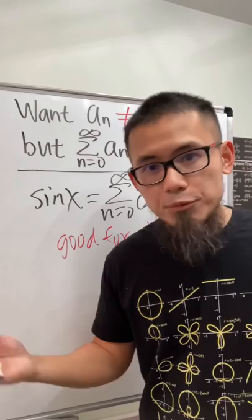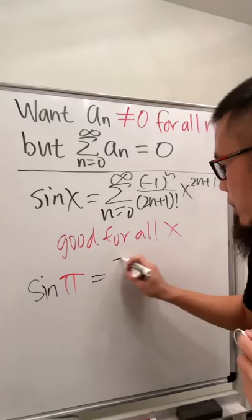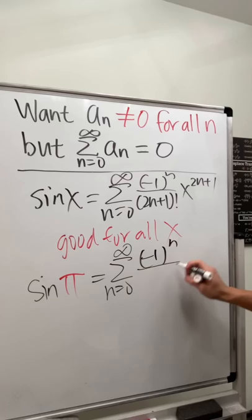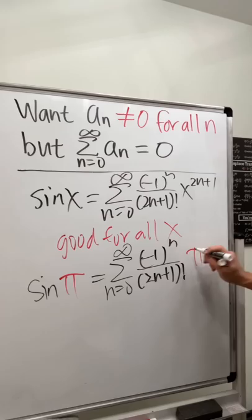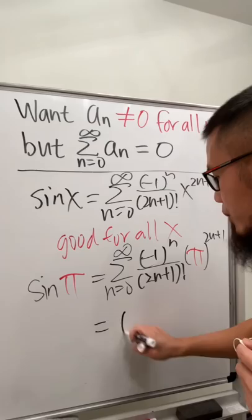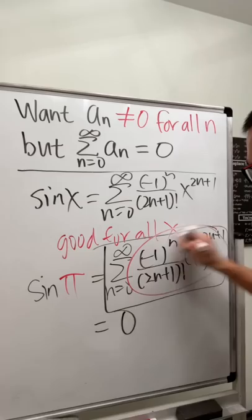We get sin(π) = Σ (from n=0 to ∞) of (−1)ⁿ · π^(2n+1) / (2n+1)! = 0. Each term aₙ = (−1)ⁿ · π^(2n+1) / (2n+1)! is never zero, yet the series sums to zero. That's our answer.